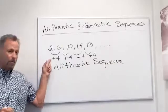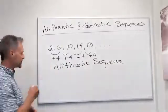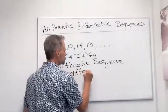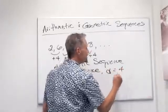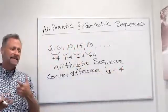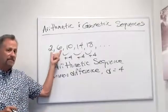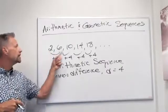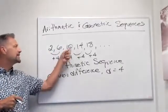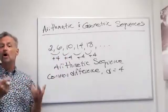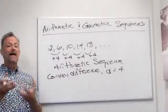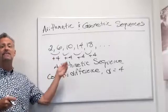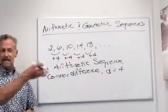Now the 4 — the number that we're adding in this case — is actually called the common difference. The common difference d is equal to 4 in this case. It's a difference because if I take any two consecutive numbers and subtract them, 6 minus 2 is 4, 10 minus 6 is 4, 14 minus 10 is 4. That's why it's called the common difference. What makes it an arithmetic sequence is it's got a common difference — we add the same number to get the next number in the sequence.